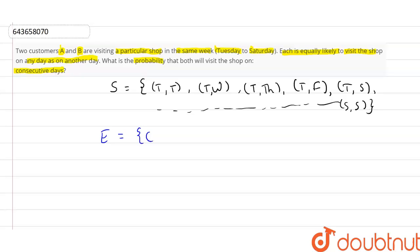We know that this will be (T,W), then (W,T), then Wednesday and Thursday. Similarly, Thursday and Wednesday, then Thursday and Friday, then Friday and Thursday, then Friday and Saturday, and lastly Saturday and Friday.